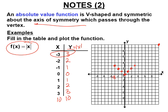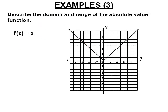You'll probably want a straight edge for this. That's the graph of f(x) equals the absolute value of x — negative three maps to three, negative two to two, negative one to one, zero to zero, and the positive side mirrors it symmetrically. The domain goes on forever in both the positive and negative direction with no gaps, so the domain is all real numbers.